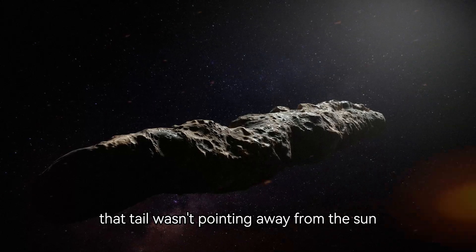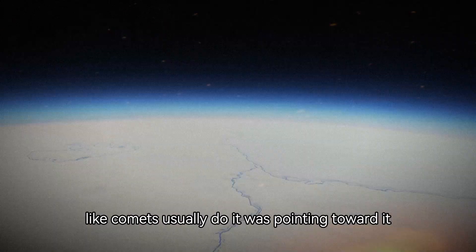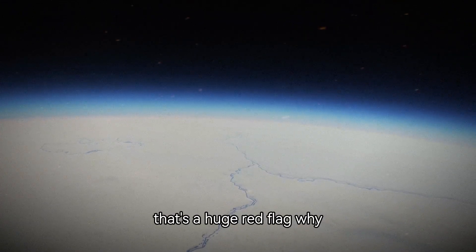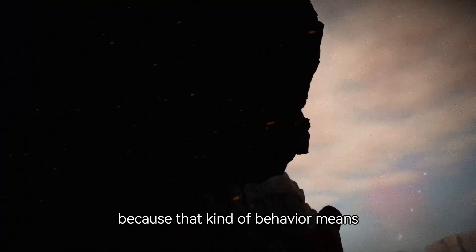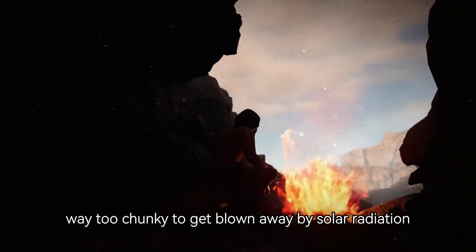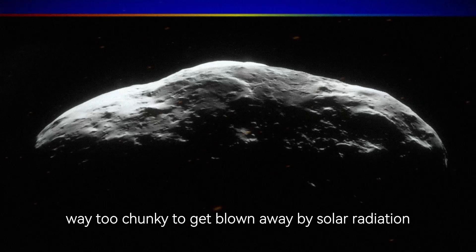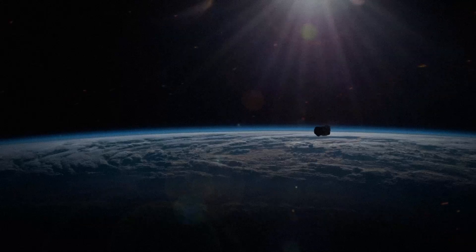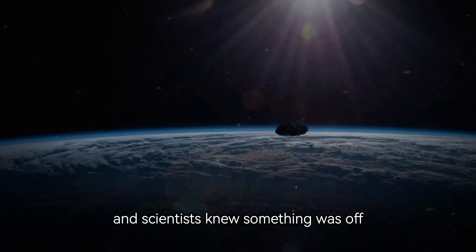But here's the twist. That tail wasn't pointing away from the sun like comets usually do. It was pointing toward it. That's a huge red flag. Why? Because that kind of behavior means the dust is made up of larger, heavier particles, way too chunky to get blown away by solar radiation like normal comet dust. That's not typical for comets, and scientists knew something was off.